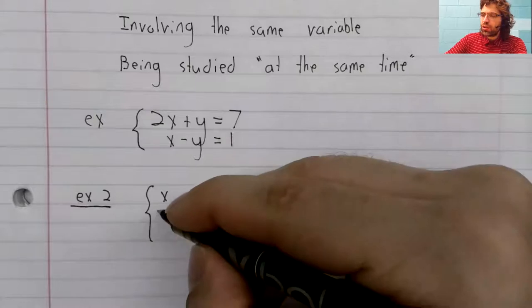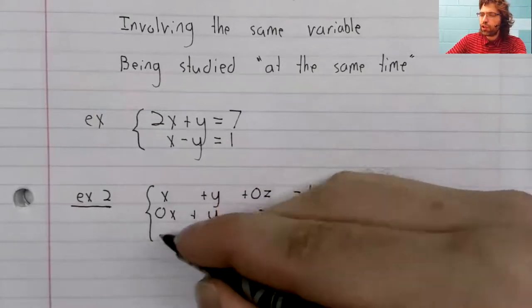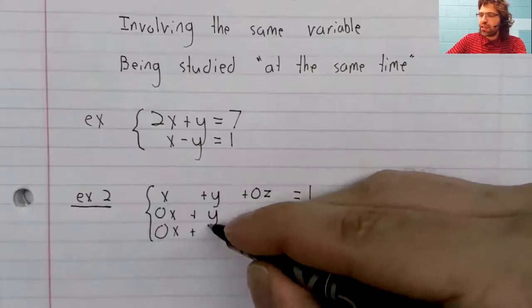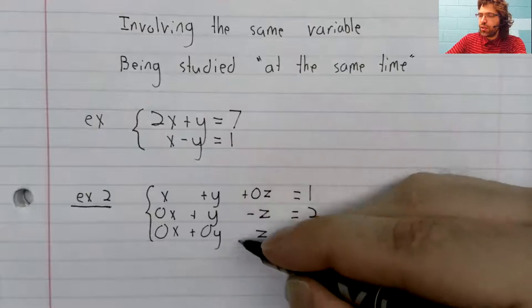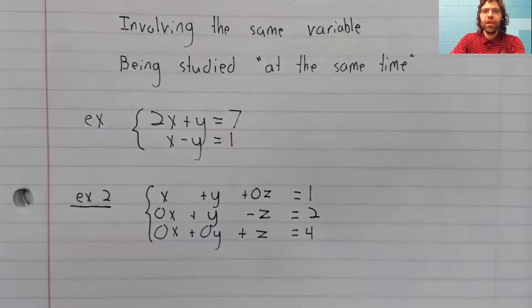In particular, if we don't have one of the variables, we can still write it in with a zero attached. So every variable does not have to show up in every equation.